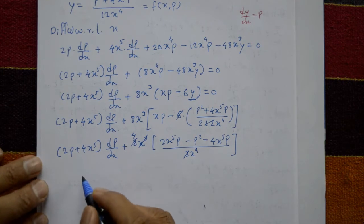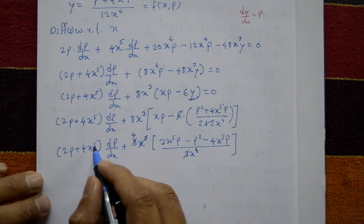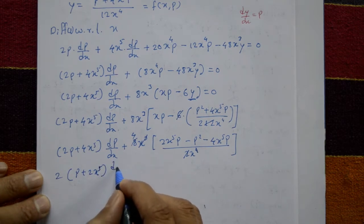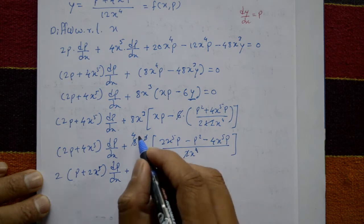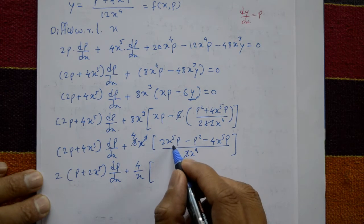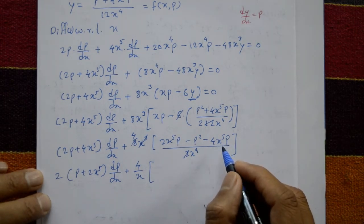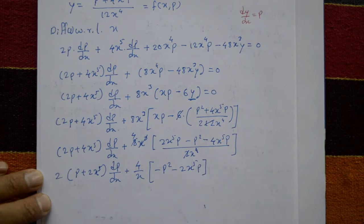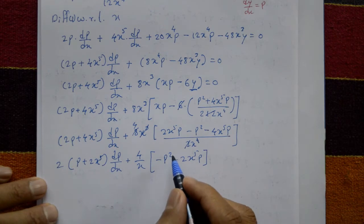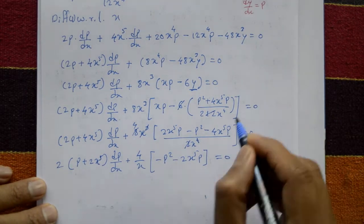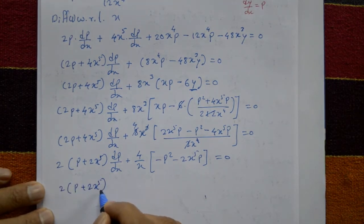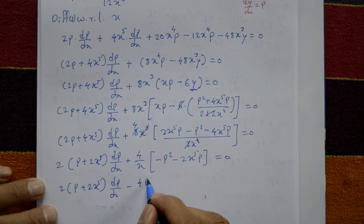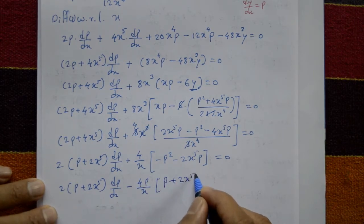Collecting terms: take 2 outside to get 2 times (p plus 2x to the 5) times dp/dx, minus (4p over x) times (p plus 2x to the 5) equals 0. Factoring out (p plus 2x to the 5): 2 times (p plus 2x to the 5) times dp/dx equals (4p over x) times (p plus 2x to the 5). The factor (p plus 2x to the 5) cancels from both sides, and 2 also cancels.